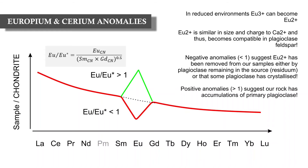Positive europium anomalies — values above one — suggest that the rock has primary plagioclase in it, that no Eu²⁺ was lost during mantle melting or fractional crystallization, and that there may be accumulated primary plagioclase cumulates.